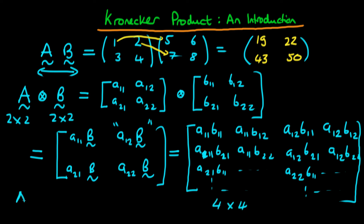In general, if I take the Kronecker product of a matrix A with another matrix B, where matrix A is M by N and matrix B is P by Q, then the product has dimensions M times P by N times Q.